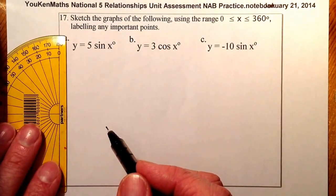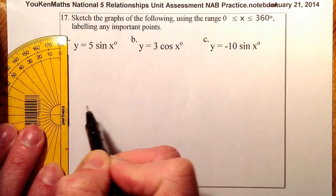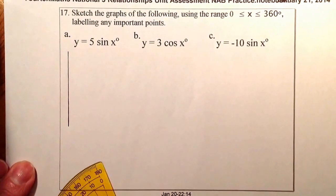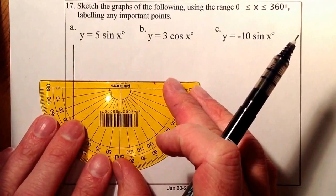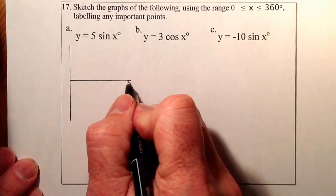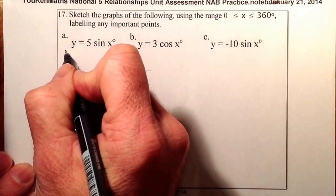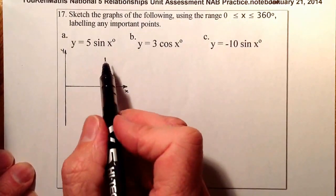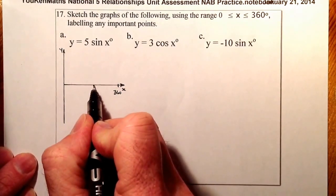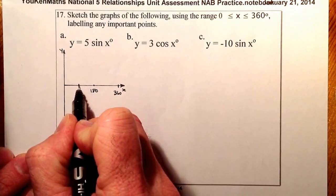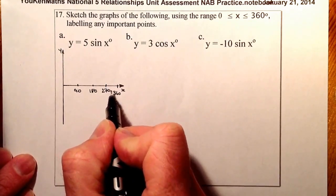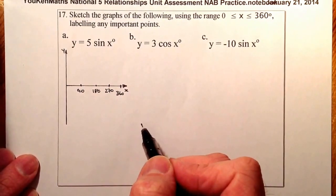I'm going to draw the graph with a larger amplitude. This 5 here will multiply all the y-coordinates by 5. I'll set up some axes: that's my x-axis, and that's my y-axis. I know the period is going to be 360 degrees, so I'll mark 360, then half that gives 180, half again gives 90, and adding 90 and 180 together gives 270. So the x-axis is set up with 90, 180, 270, and 360.